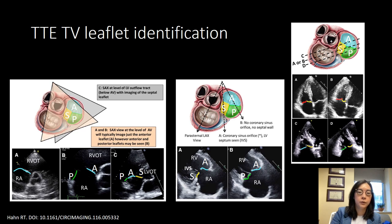In an RV inflow view where you can see two leaflets, if you see a coronary sinus, then you're looking at the septal as well as the anterior leaflet. If you've angled so you don't see the coronary sinus, then you're looking at the posterior leaflet and the anterior leaflet. In a four-chamber view, it's very hard without surrounding structures to know where you're looking — it could be the septal and anterior or septal and posterior leaflets. However, if you're tilted anteriorly and you see the aortic root or LV outflow tract, then you know you're cutting through the septal and anterior leaflet. If you've tilted back and you see the coronary sinus, you know you're cutting through the septal and posterior leaflets.